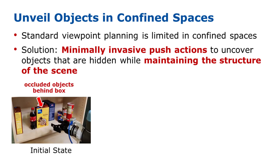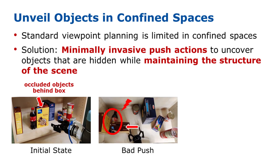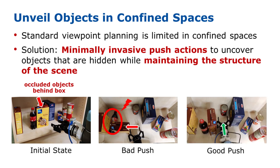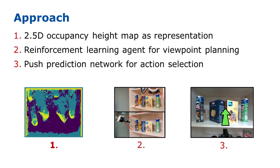Consider this scenario where the robot needs to move the occluding box to map objects behind it. A push to the left could lead to a drop of the bottle next to it, whereas a push to the front would shift the box and could safely uncover the hidden can. Therefore, we present Viewpoint Push Planning, a framework for object mapping in confined spaces through viewpoint planning and uncertainty reduction via predicted minimally invasive pushes.